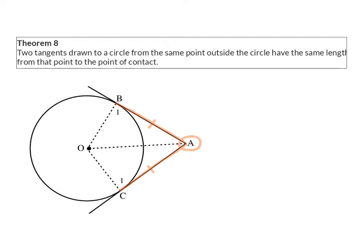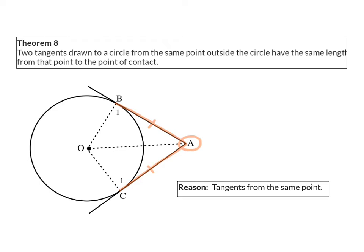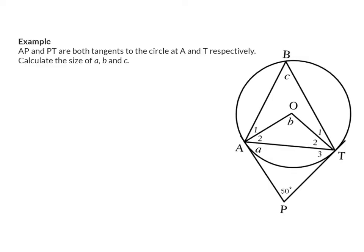The reason for this theorem: tangents from the same point. In our example, AP and PT are both tangents, touching at point A and point T respectively. The question is to calculate the size of angles A, B, and C.